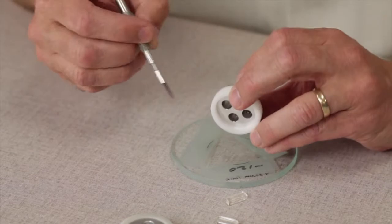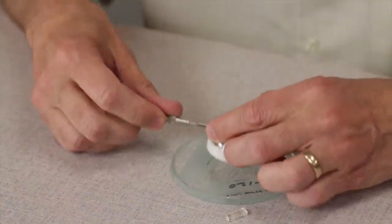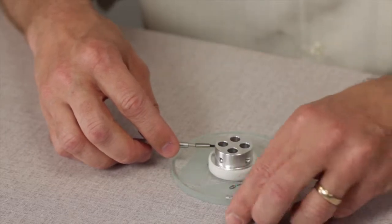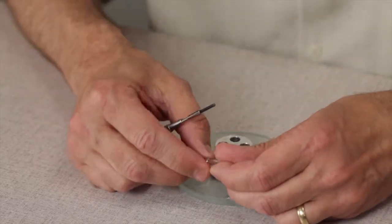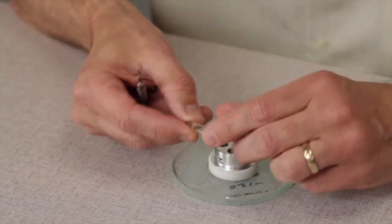There are set screws in each of the positions which lock down the sample, and we're going to clamp against the face that was open to the air, not the bottom of the mold.